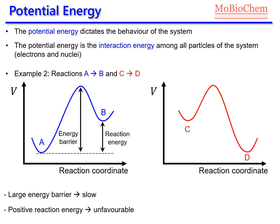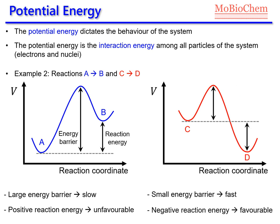If we have a second reaction going from C to D, the energy barrier is smaller than in the previous case, so that means our reaction will be faster. Now the potential energy when we go from C to D is negative, so the reaction will be favorable from the thermodynamic point of view. As we can see, if we know the shape of the potential energy surface, we can know a lot of information about the process we are investigating.